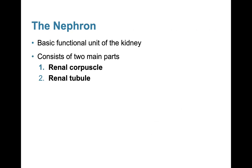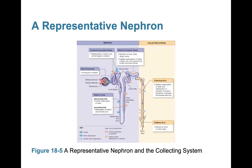The nephron is the basic functional unit of the kidney, consisting of two main parts: the renal corpuscle and the renal tubule. The tubule system includes the proximal convoluted tubule (PCT), the nephron loop or loop of Henle, and the distal convoluted tubule (DCT).